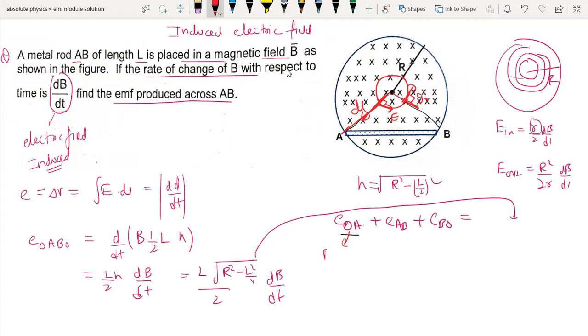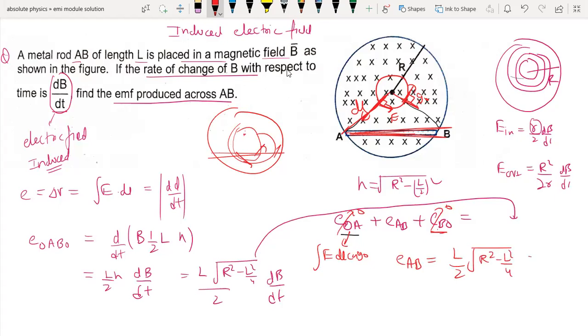This is E dot dL cos theta. The final result is equal to one half under root R square minus L square by 4 into dB by dt.